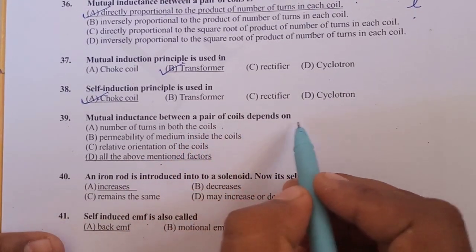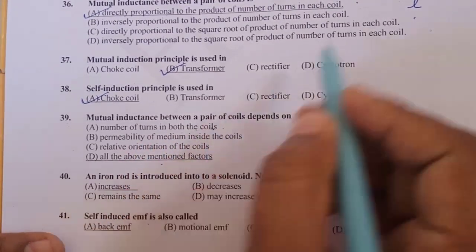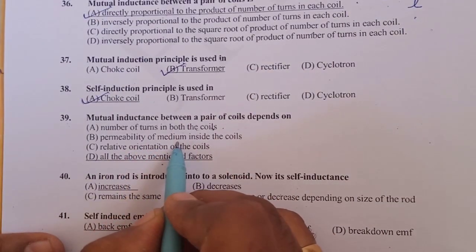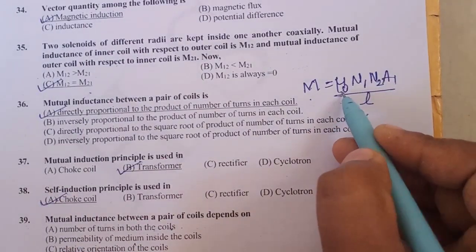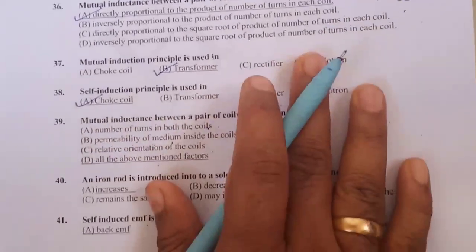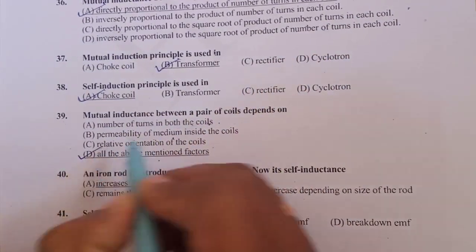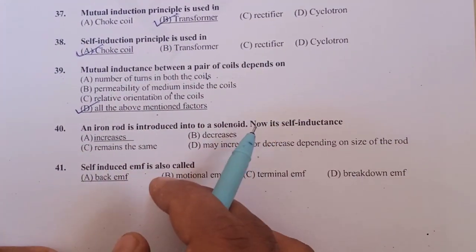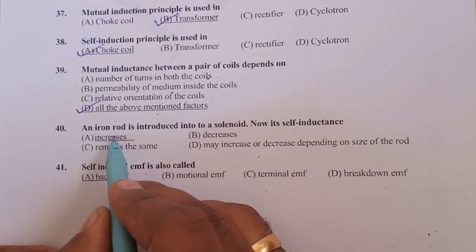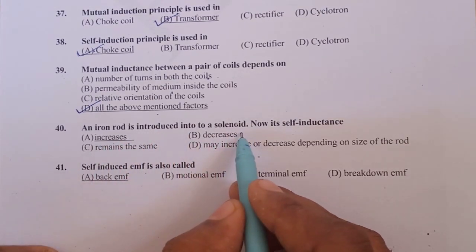Mutual inductance between a pair of coils depends on number of turns on each coil, permeability of the medium, and relative orientation of the coil. So all the above mentioned factors are valid. An iron rod is introduced into a solenoid. Now its self inductance increases. Iron is a ferromagnetic material. It increases self inductance.